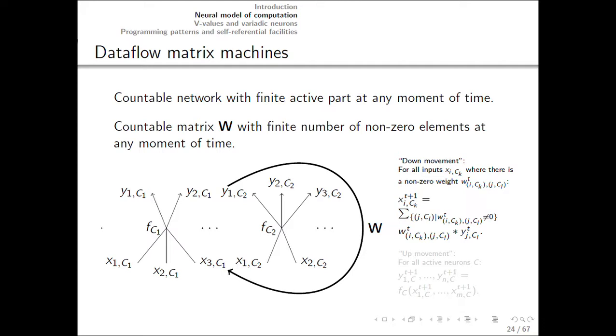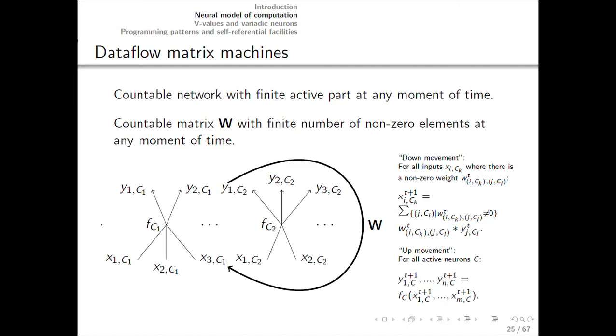So on the down movement, each input which has a non-zero matrix rho associated with it gets re-computed as a linear combination of network outputs. On the up movement, each active neuron, that is, each neuron which has a non-zero weight associated with one of its inputs or outputs, applies its activation function to its inputs, producing new outputs.